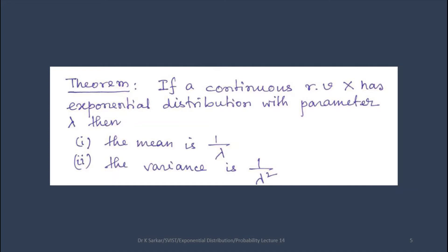If a continuous random variable X has exponential distribution with parameter lambda, then number one, the mean is 1 by lambda, and number two, the variance is 1 by lambda squared.